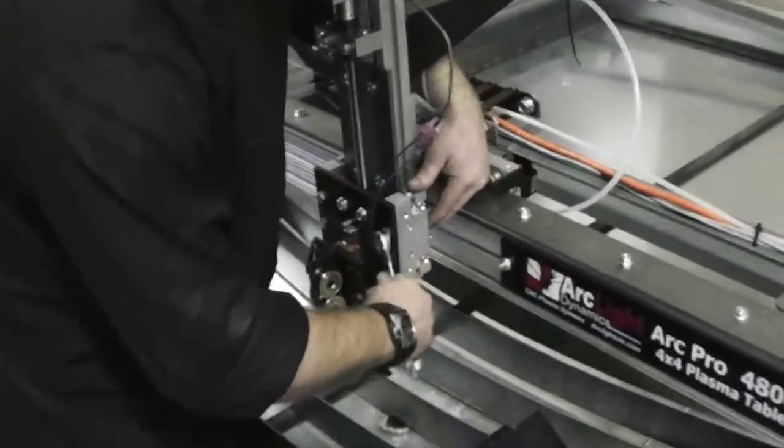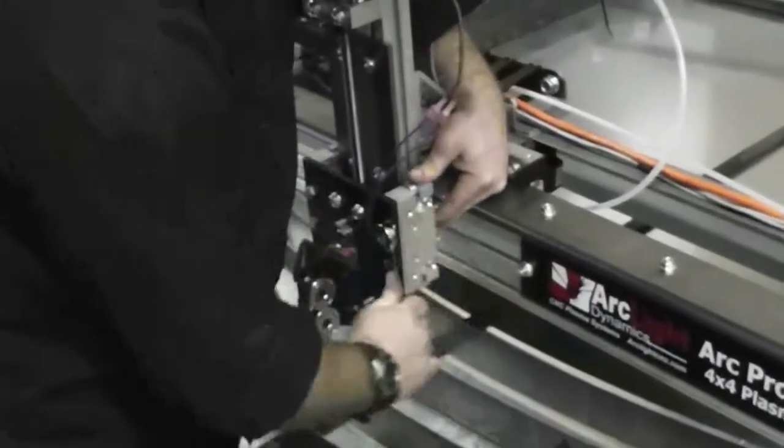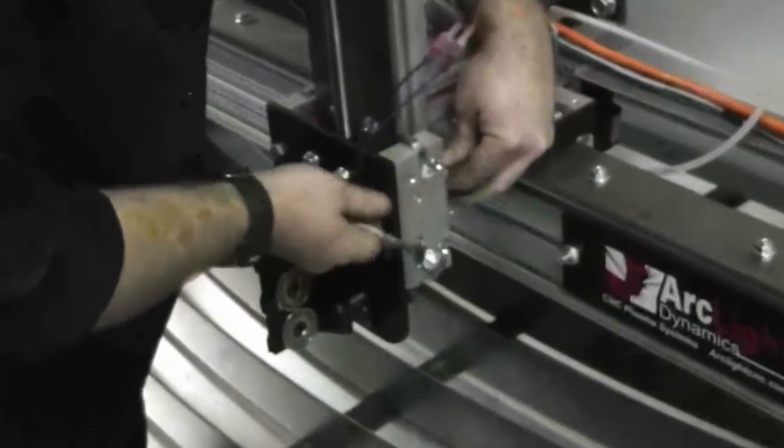The next step is to mount the actual engraver head. To do this, you are going to remove the two bolts on the right side of the Z axis carriage.